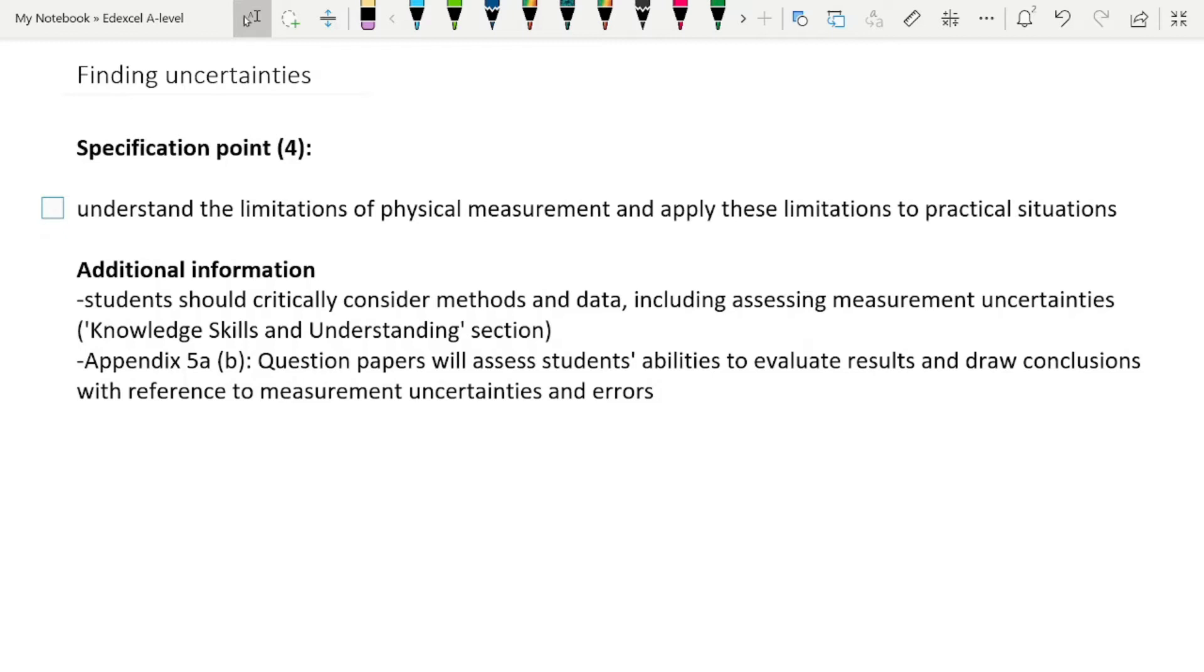If you're doing the home A level half of your paper 3 is going to be on practical work. And there's usually an uncertainty question in there. If you're doing IAL then on either paper 3 or paper 6. So let's have a look and see how is it that we find the uncertainties in measured data.